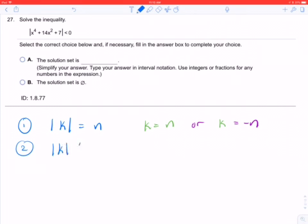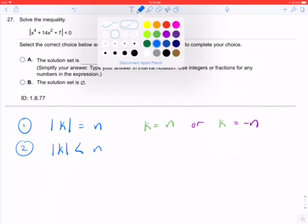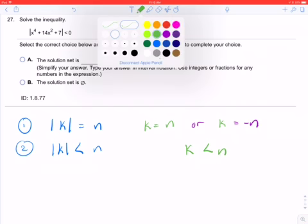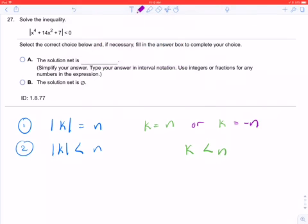So then if we have the absolute value of K is less than, or absolute value of some expression is less than some other expression, this one I do in the following way. So I still rewrite it without the absolute value. I say K is less than N, but then I tack on this. This is like an and flip flip.